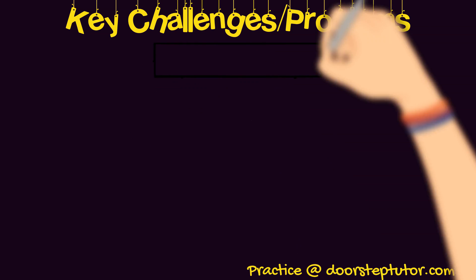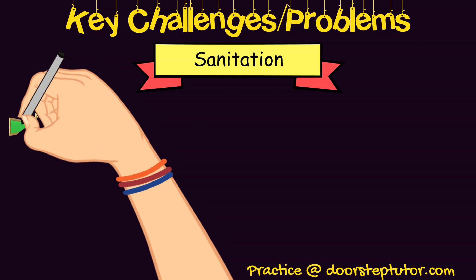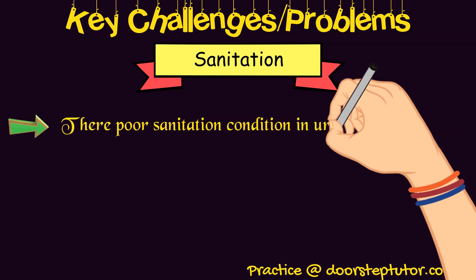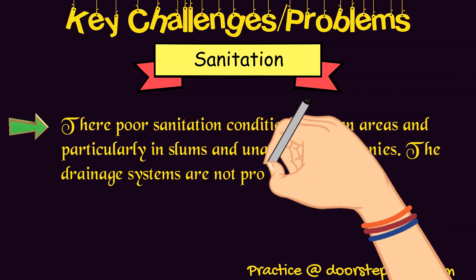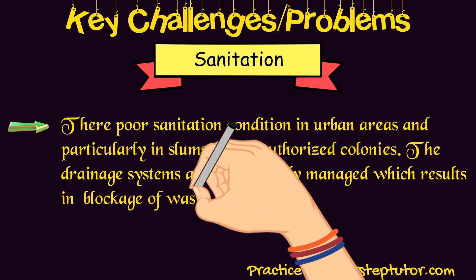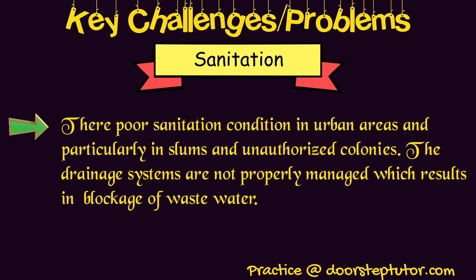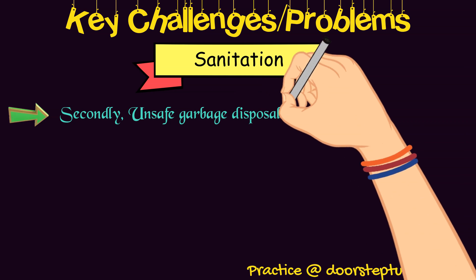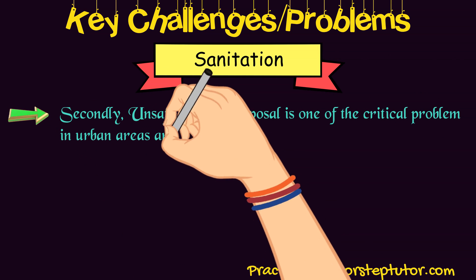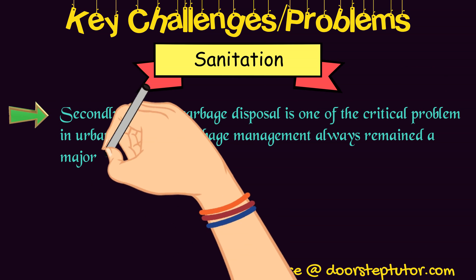The third challenge is sanitation. Proper sanitation conditions are lacking in urban areas, particularly in slums and unauthorized colonies. The drainage systems there are not properly managed, resulting in blockage of wastewater, and during the rainy season this creates various problems.